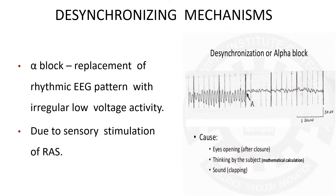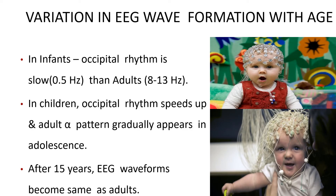Desynchronization refers to the replacement of the rhythmic EEG pattern with the irregular low-voltage activity seen in the alpha block, which is an arousal reaction. This occurs due to sensory stimulation of the reticular activating system.